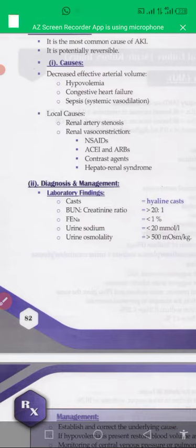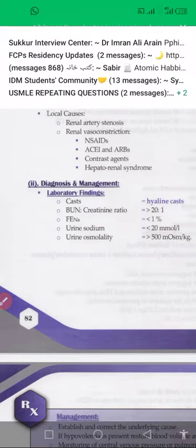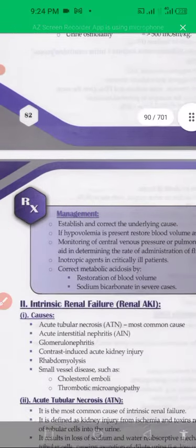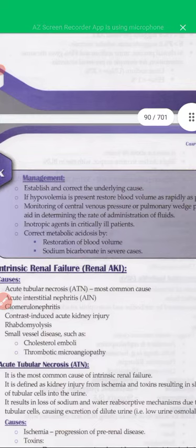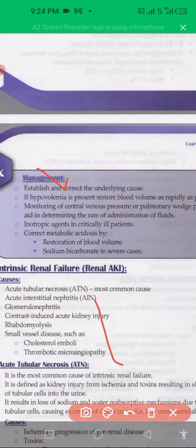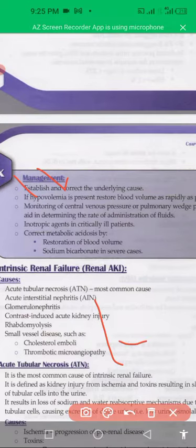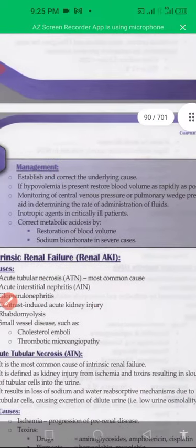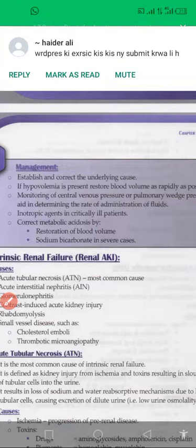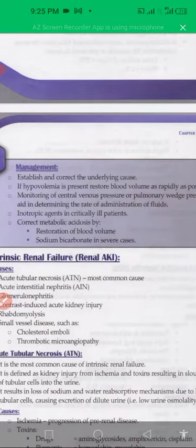For diagnostic management of acute kidney injury, we will look at blood urea nitrogen, urine sedimentation, and urine osmolality. Management depends on establishing and correcting the underlying cause. If hypovolemia is present, restore blood volume as rapidly as possible, monitor central venous pressure continuously, and correct metabolites. In this way we can manage acute kidney injury.